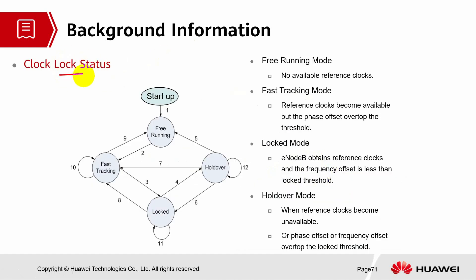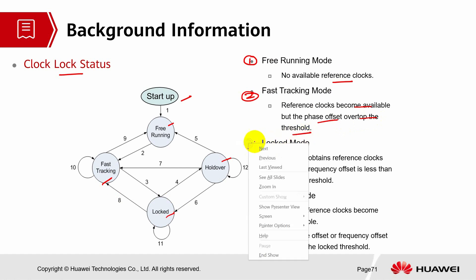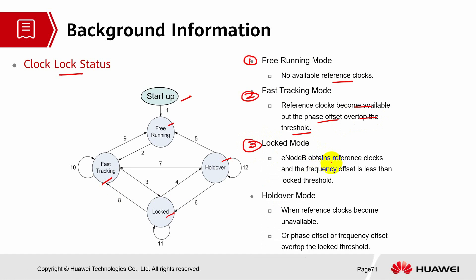Let's look into the clock lock status. We have several states: free running, hold over, locked, and fast tracking. Free running mode means there is no available reference clock, which could cause difficulty accessing the network after certain hours. Fast tracking mode means the reference clock becomes available, but the phase offset is over the threshold. Locked mode means the eNodeB obtains the reference clock and the frequency offset is less than the lock threshold — this is the best active state for the clock system. Hold over mode occurs when the reference clock becomes unavailable or the phase/frequency offset exceeds the lock threshold, but hold over is only temporarily maintained for a few hours.